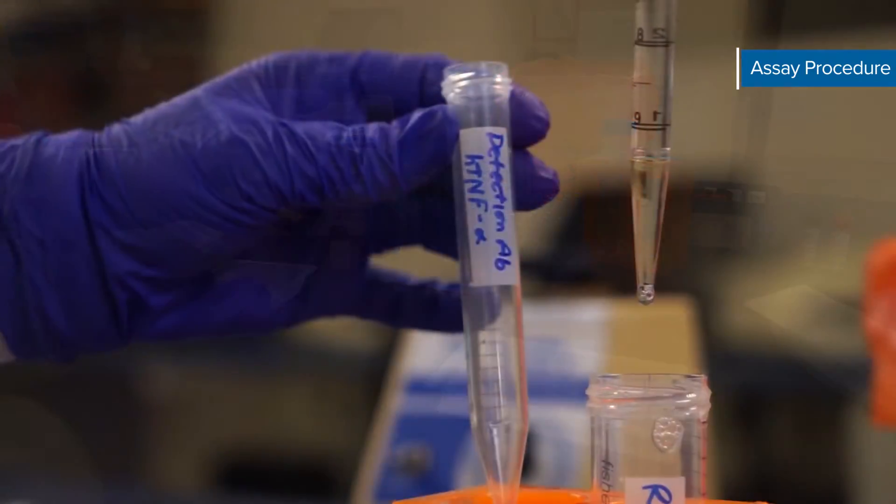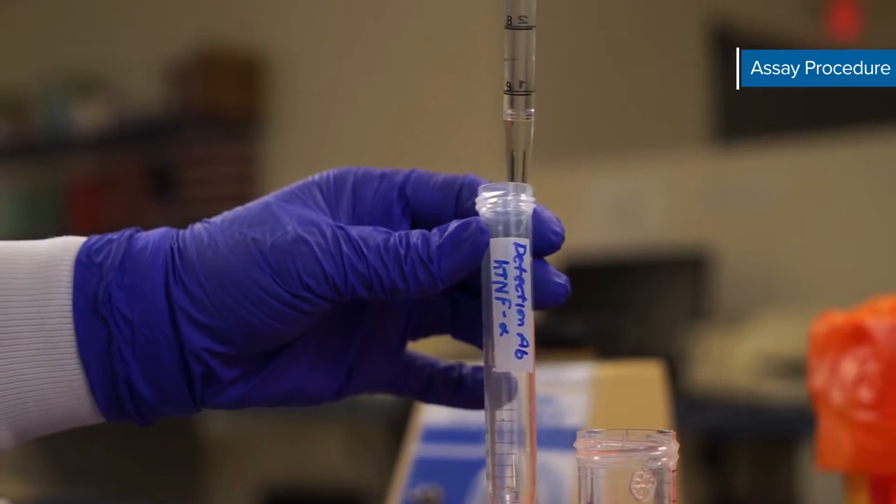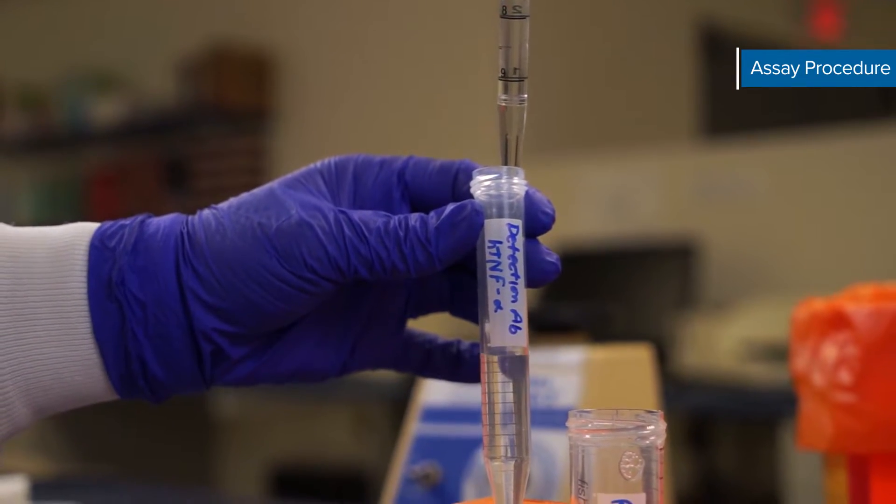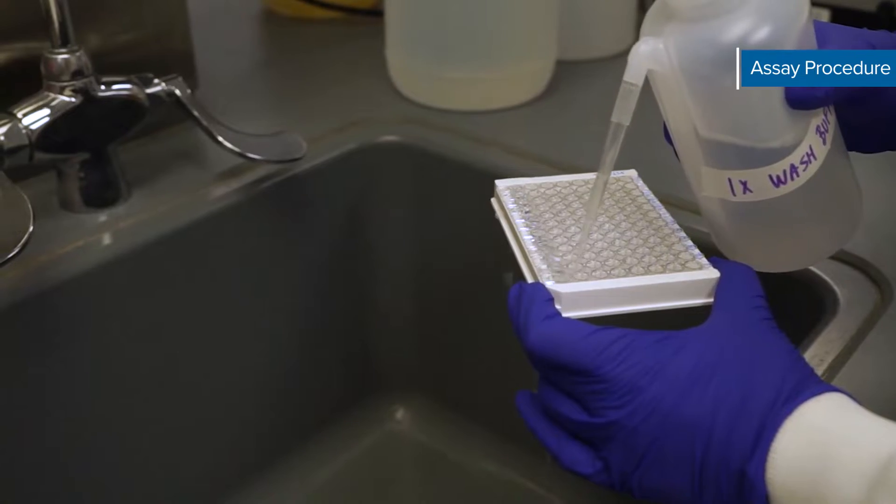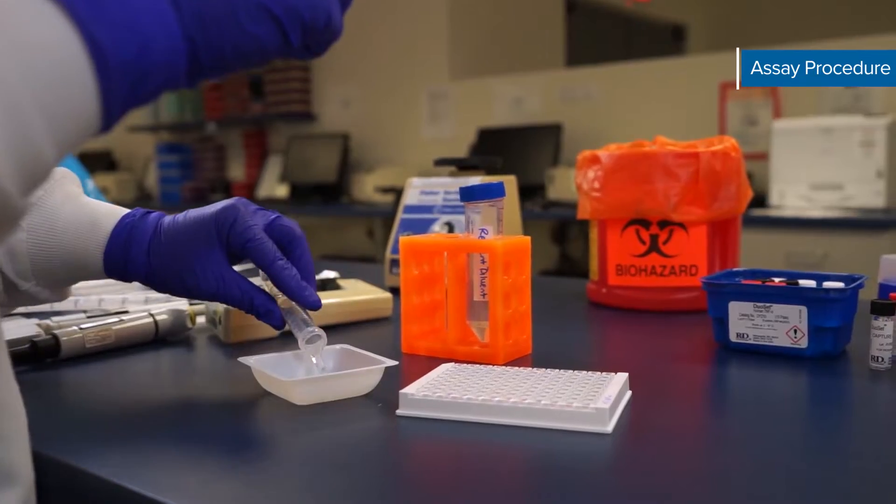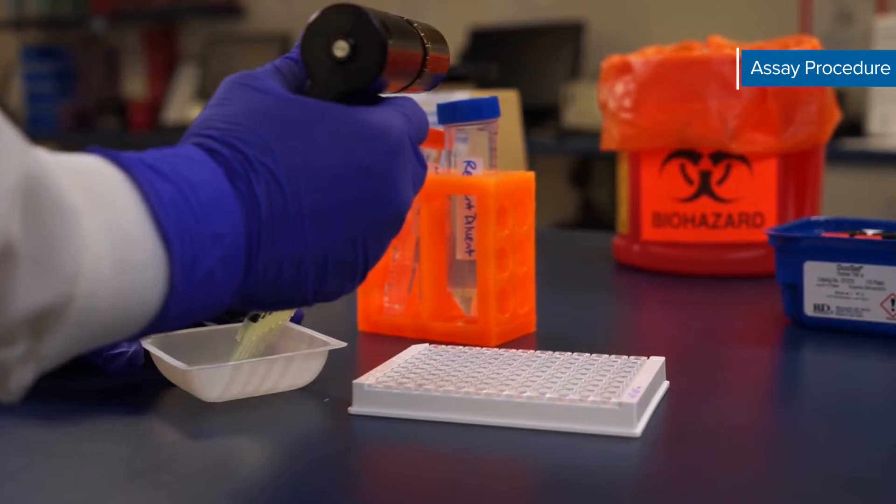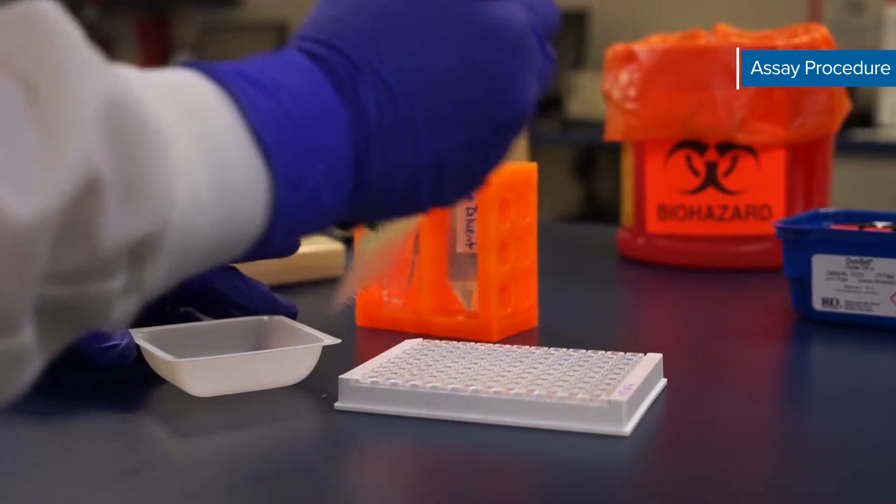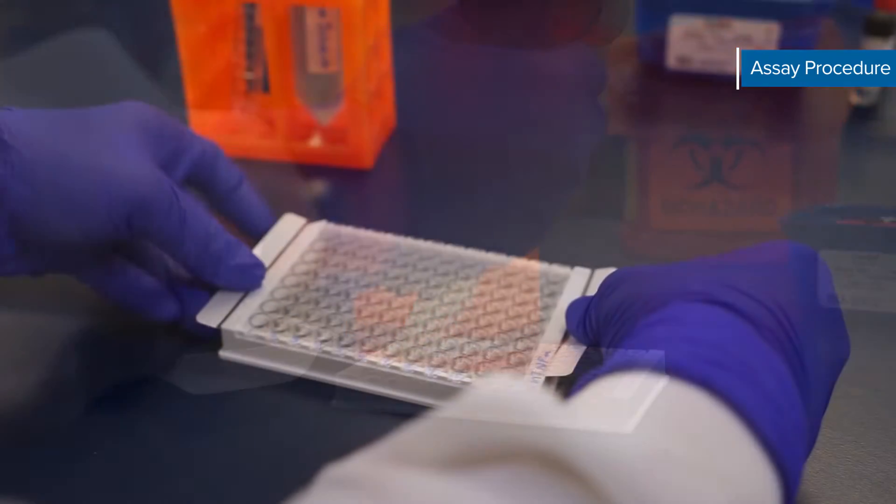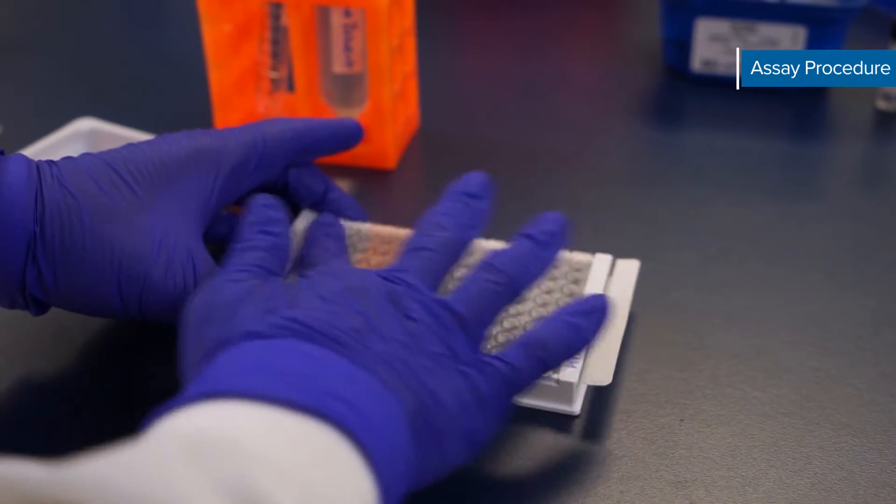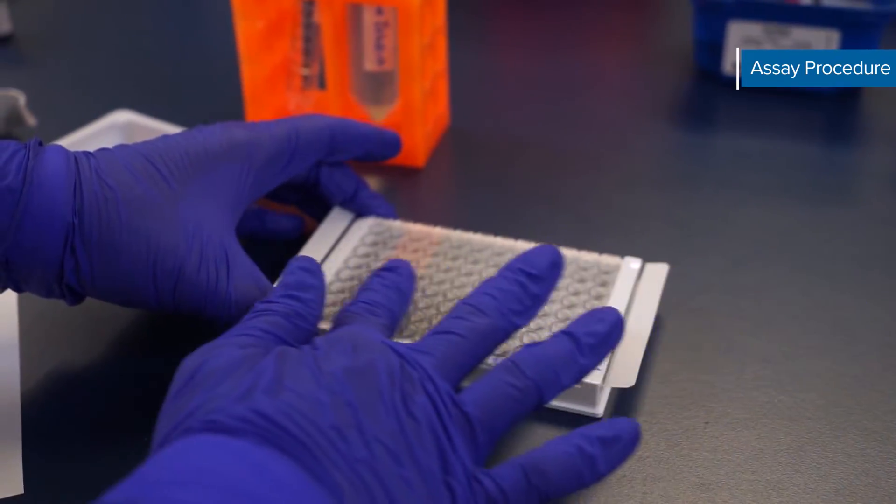During this sample incubation dilute the biotinylated detection antibody to the working concentration. Next wash the plate just as you did in the plate preparation section. Next add 100 microliters of the diluted biotinylated detection antibody to each well. Cover with a new adhesive strip and incubate for two hours at room temperature on the benchtop.